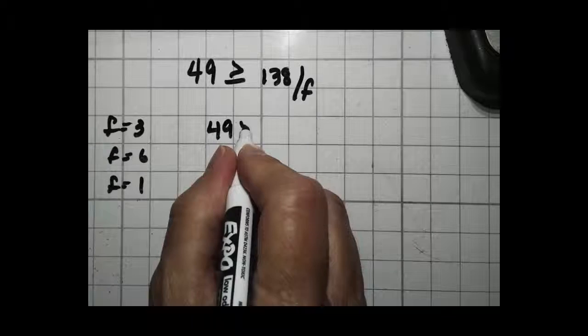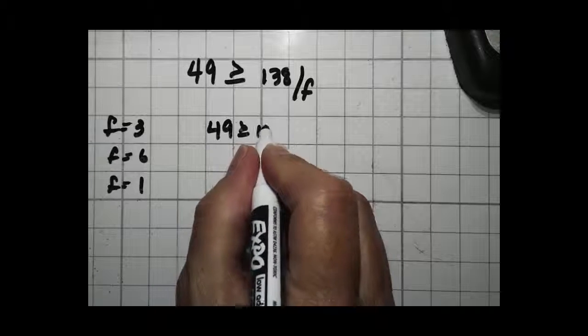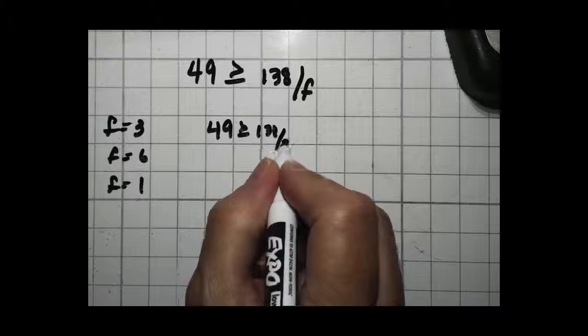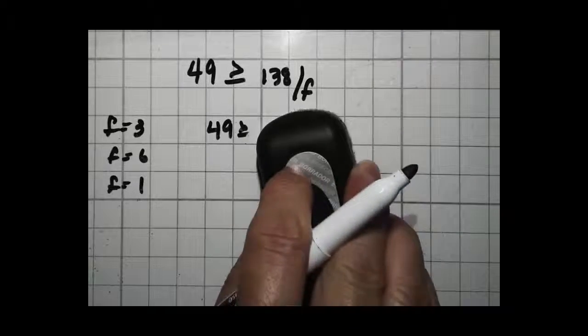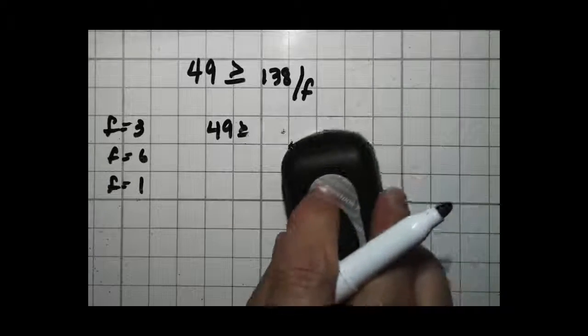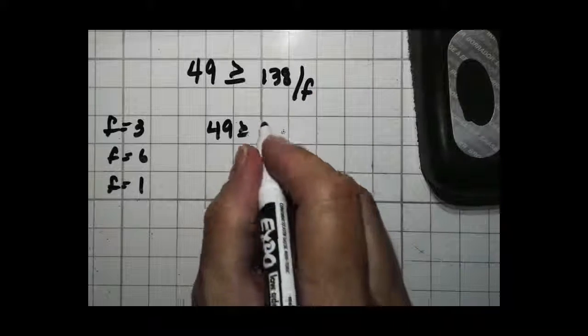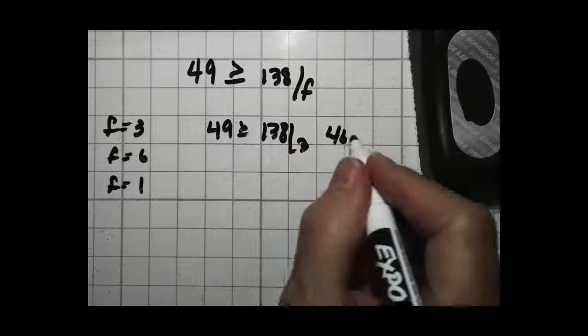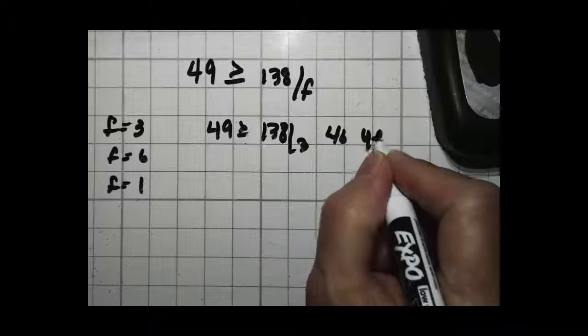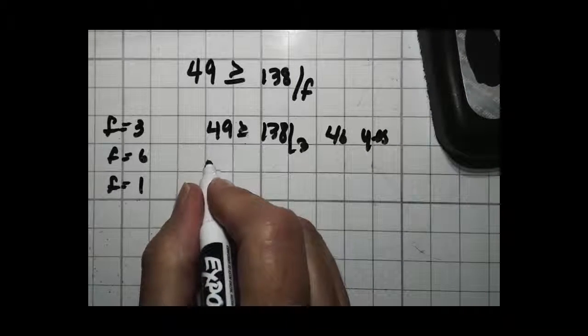So, 49 greater than or equal to 138 divided by 3. Well, if you take 138 and divide it by 3, you'll find that 138 divided by 3 is 46. Is 49 greater than 46? Yes, it is.